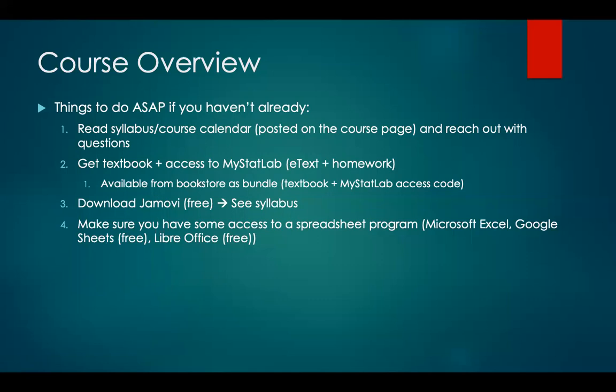Number two is to get textbook access and access to MyStatLab immediately. This is available through the bookstore as a bundle and we were able to find a low-cost option. Number three is to download Jamovi. Jamovi is a free, open-source statistical analysis software package that you can download and use for free, and there are detailed instructions on how to do so in the syllabus. We're going to be using this later on in the course but it's good to just have it installed on your machine now.